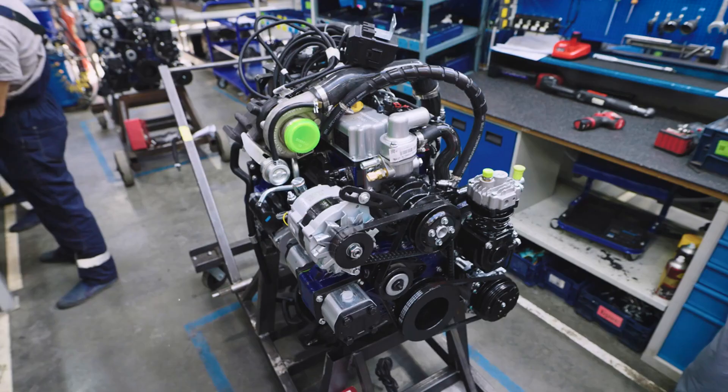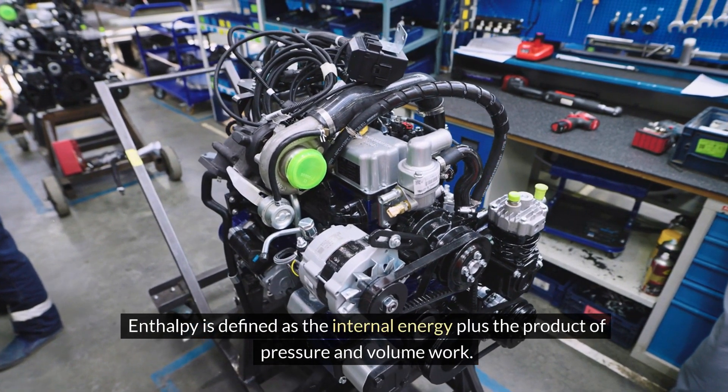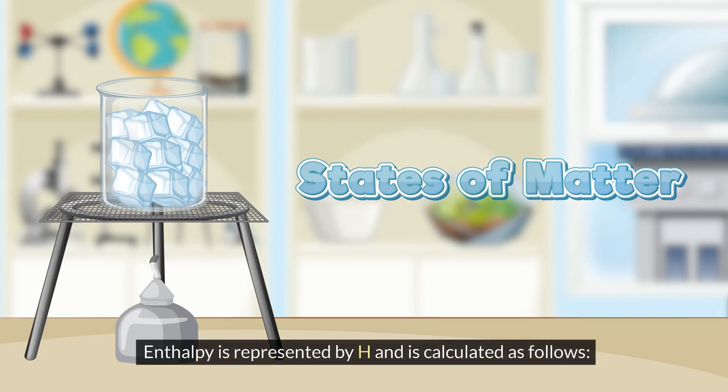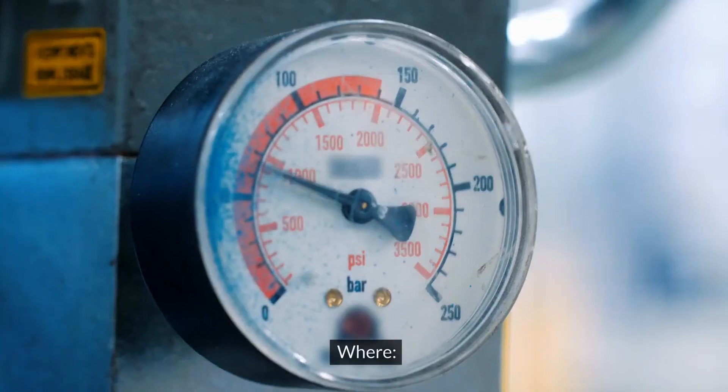Enthalpy is defined as the internal energy plus the product of pressure and volume work. Enthalpy is represented by H and is calculated as follows: H equals U plus PV.